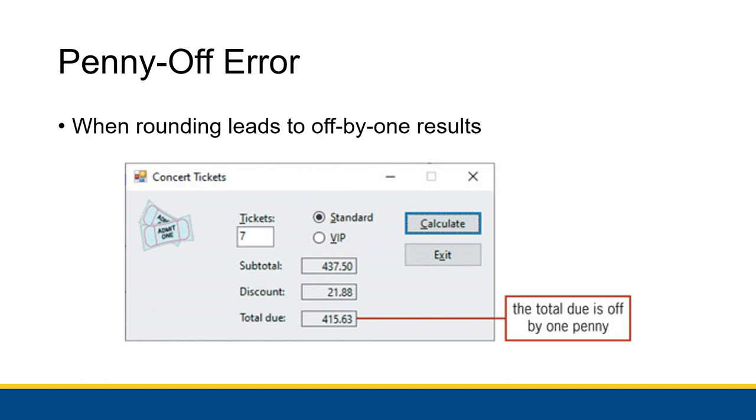The issue is when you round currency values, if you round them at just the wrong time, you can have these off by one kind of results where in this case we have a subtotal and then a discount applied to that subtotal. You subtract the discount from the subtotal and you get the total due, but the total due is off by one penny.